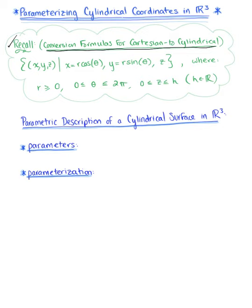Recall back when we looked at multiple integrals, we saw that for an ordered triplet x, y, z, x is defined as r cosine theta, y is defined as r sine of theta, and z is simply z. This is where the radius r is greater than or equal to zero, the angle theta is greater than or equal to zero and less than or equal to 2 pi, and z is greater than or equal to zero and less than or equal to h, where h is just some scalar. We want to use this and these conversion formulas to find a parametric description for a cylindrical surface in R3.